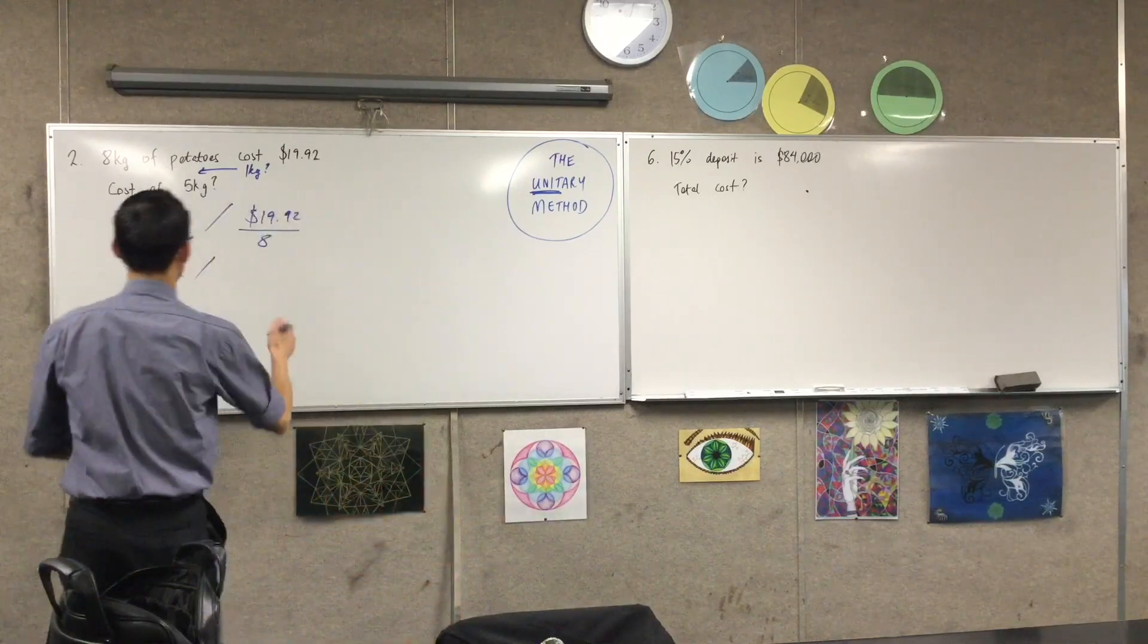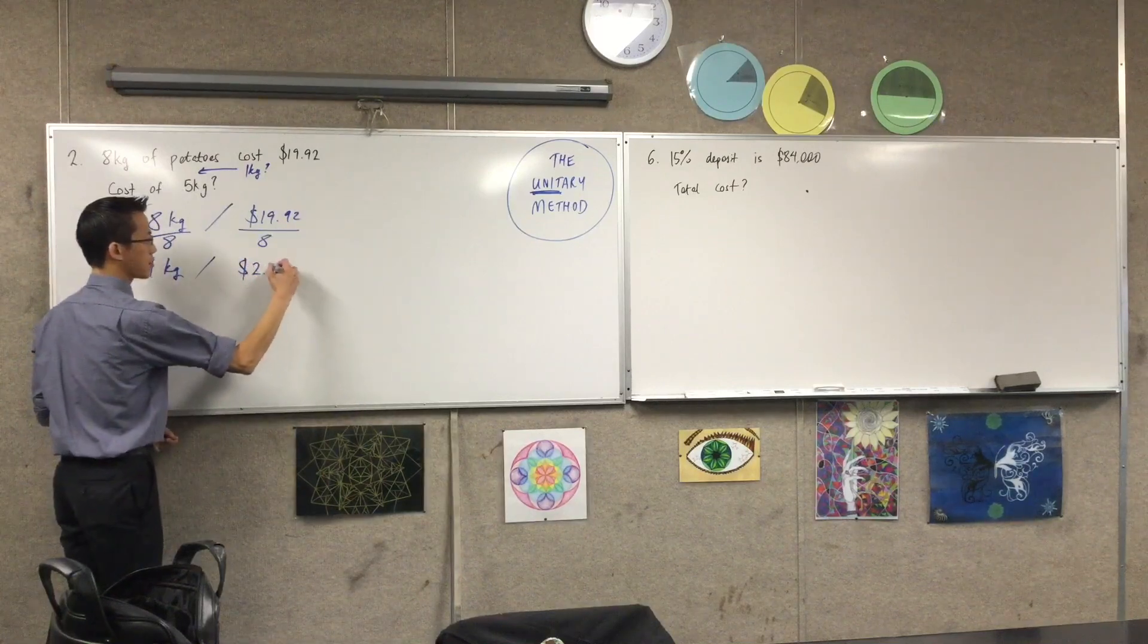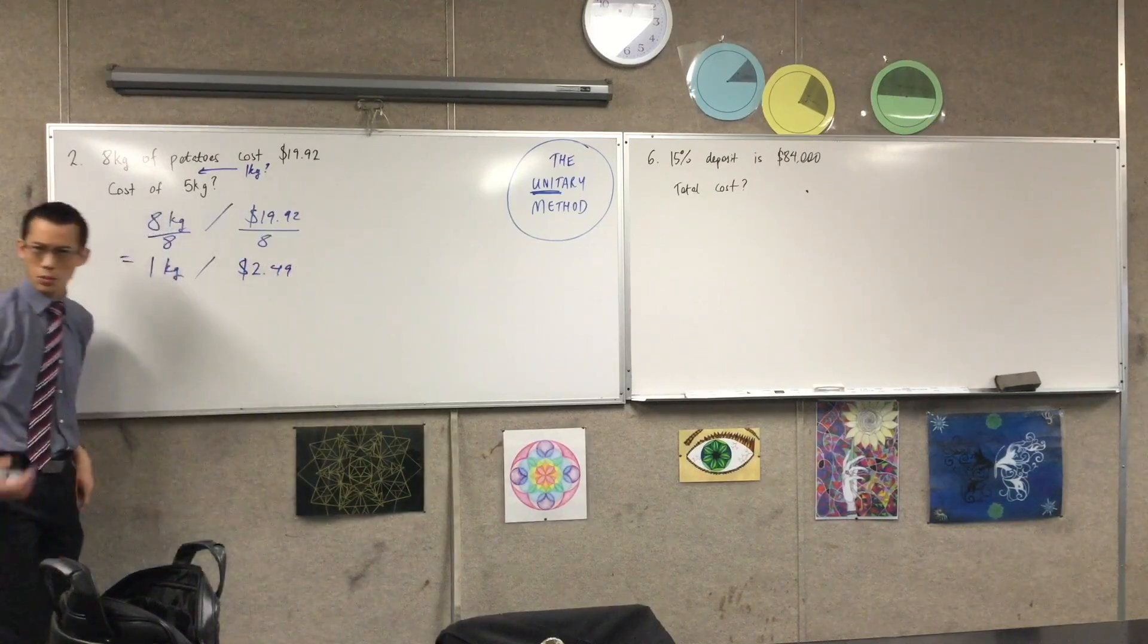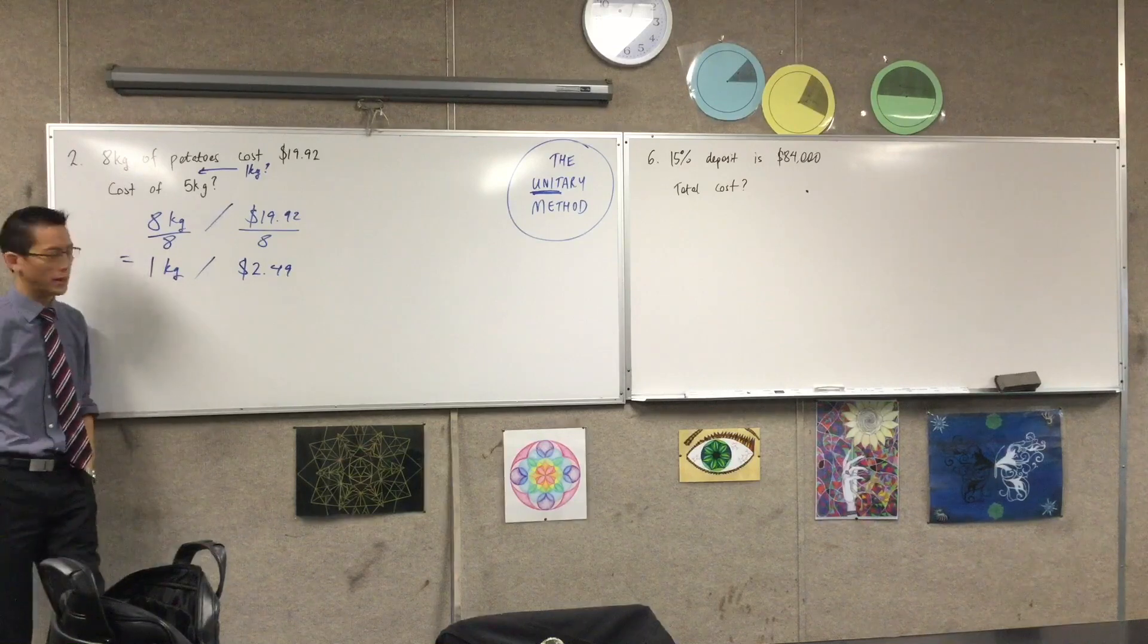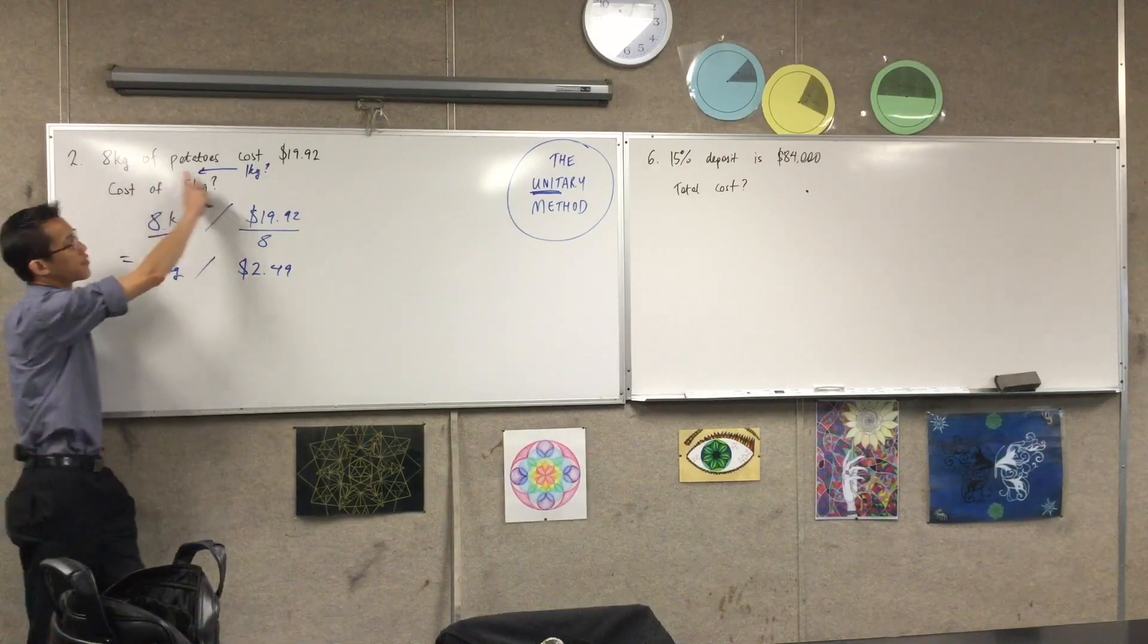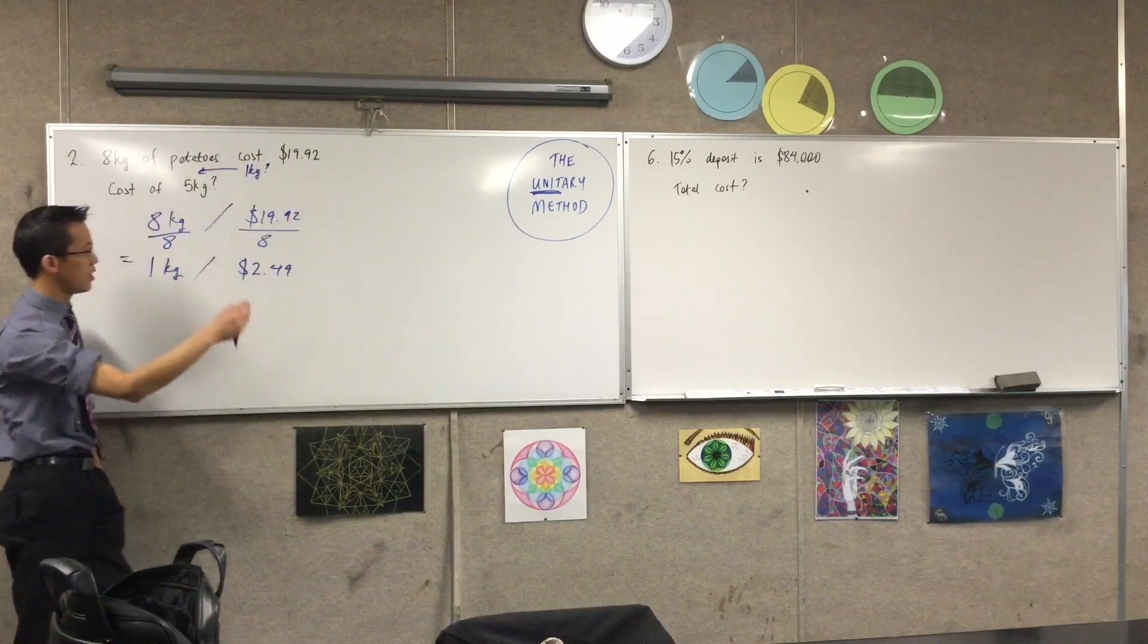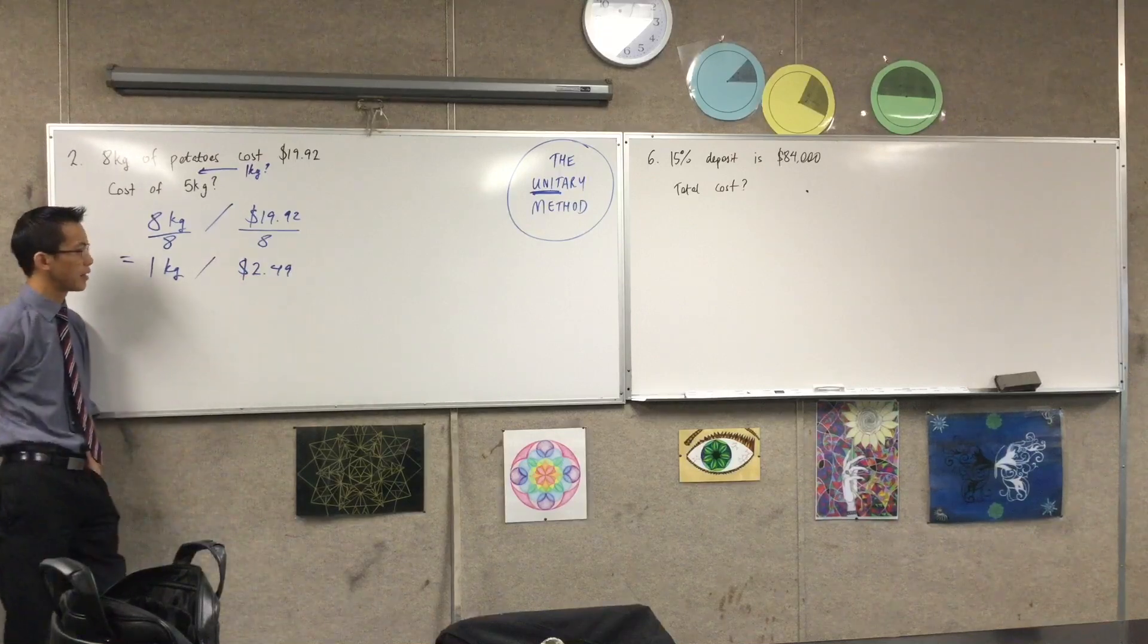And you get a price per kilo, which is what you're used to actually seeing when you're shopping, of course. So this is your after the fact, you've bought it, and that's your total, and this is what it was actually charging you per kilo.